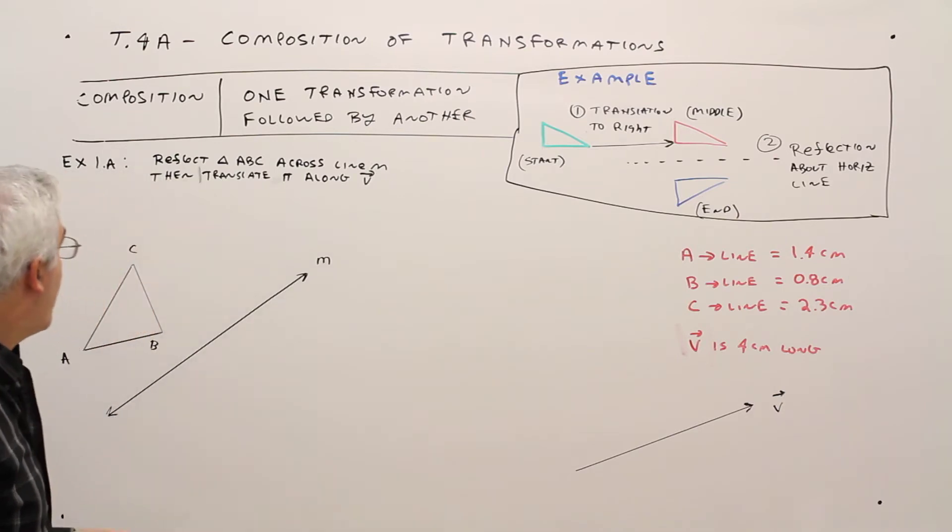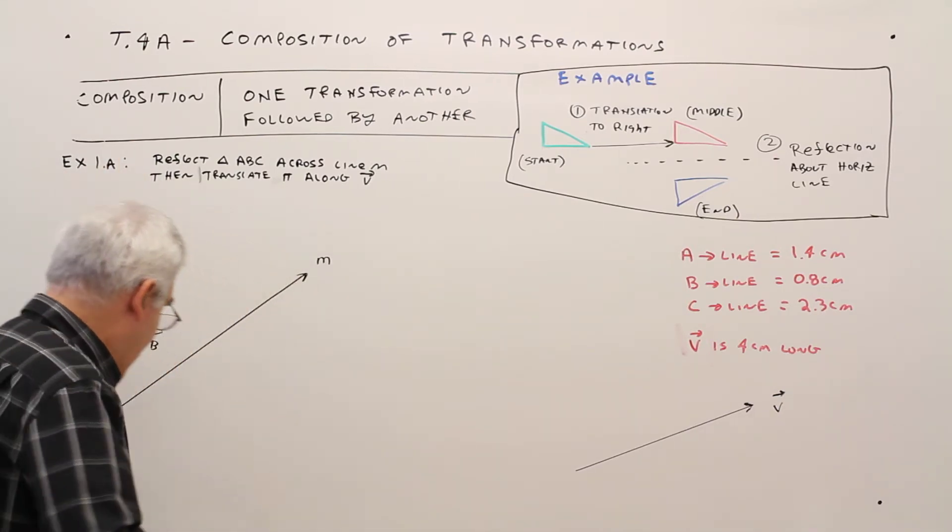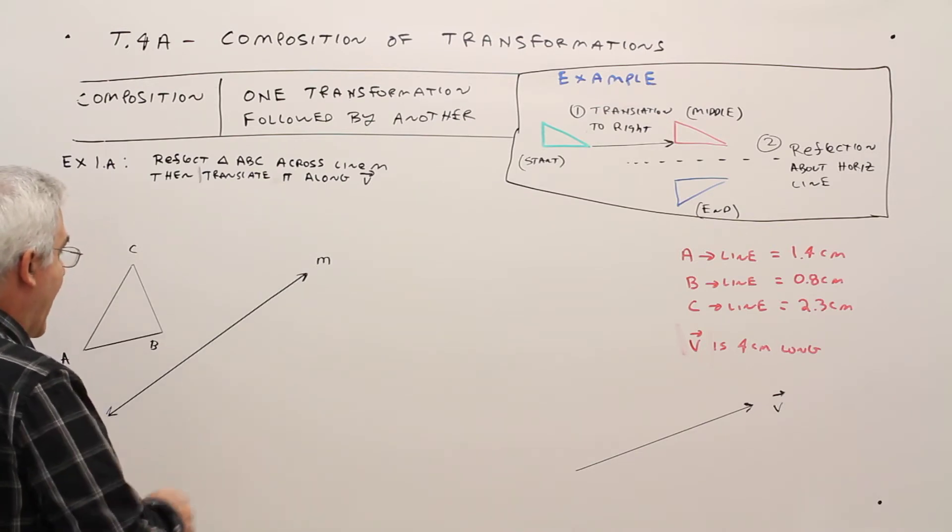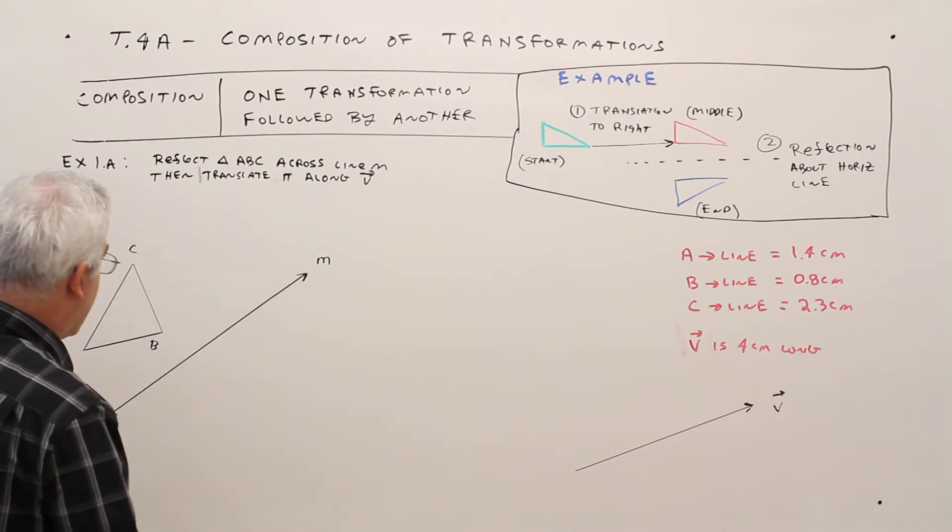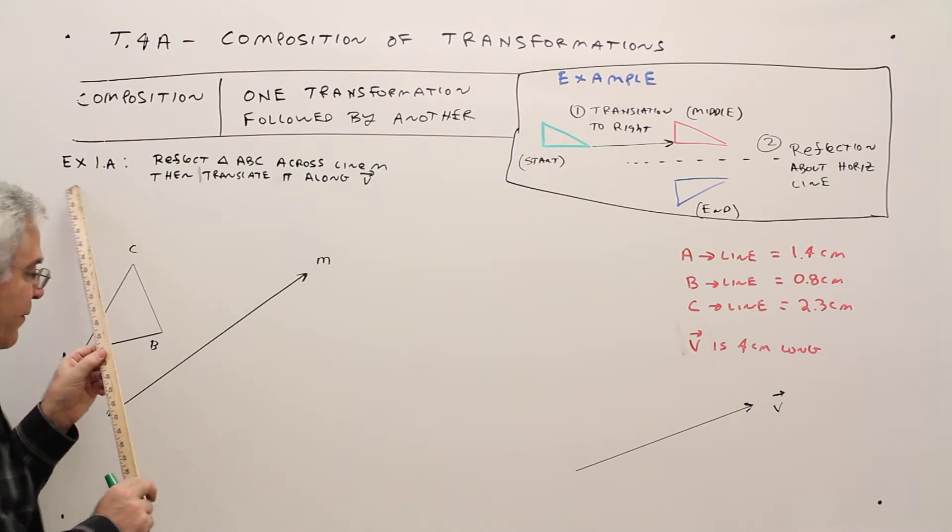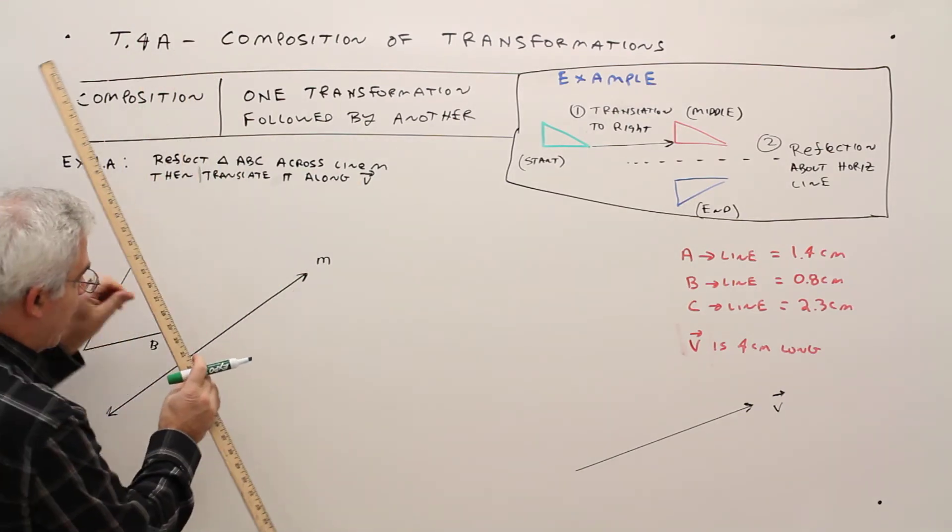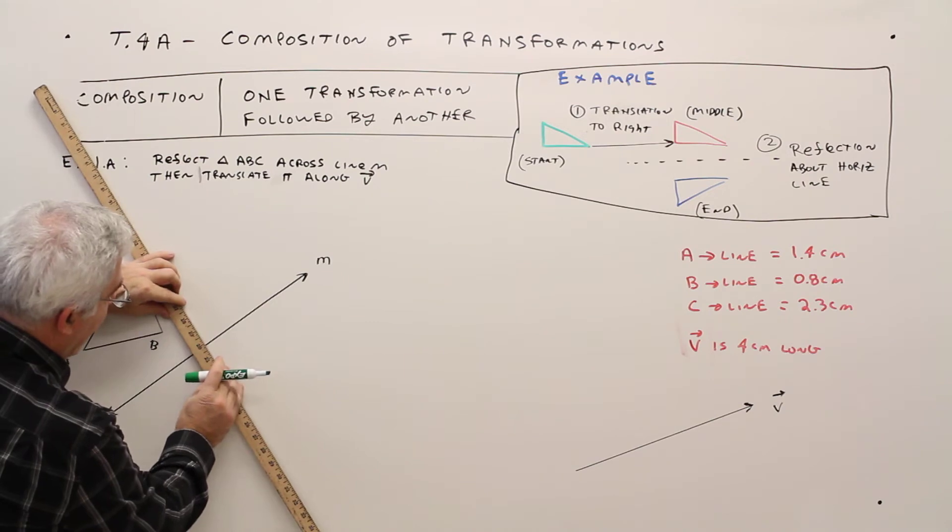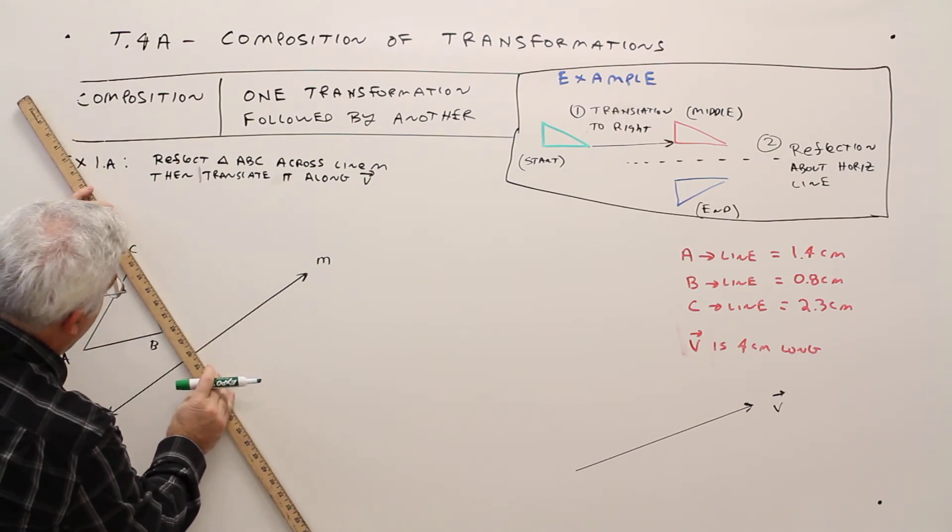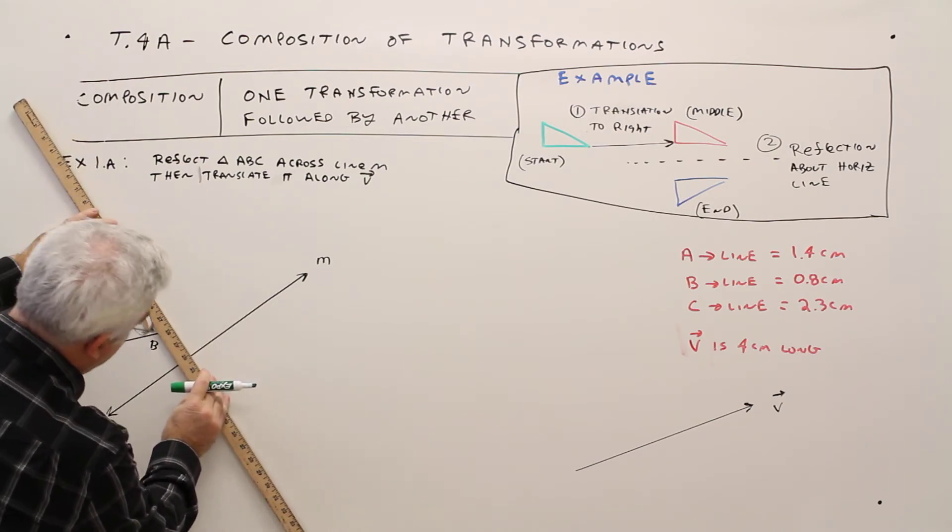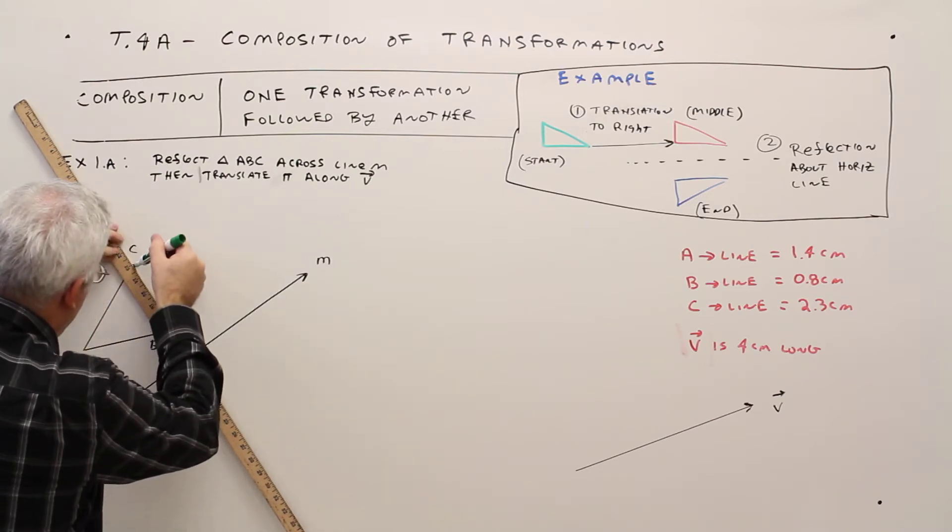Okay, so first we'll do the reflection. So for the reflection, don't forget, we start with our helper lines being perpendicular to the line of reflection. So what I taught you is just take a marking on your ruler and make it so that it's parallel. And then kind of line up.